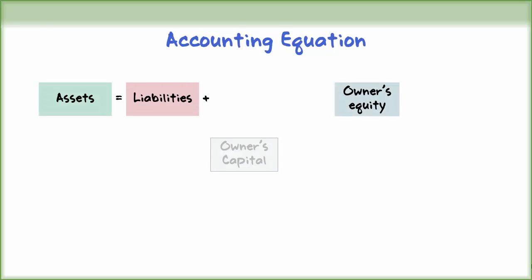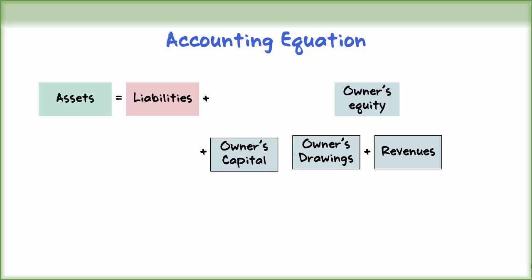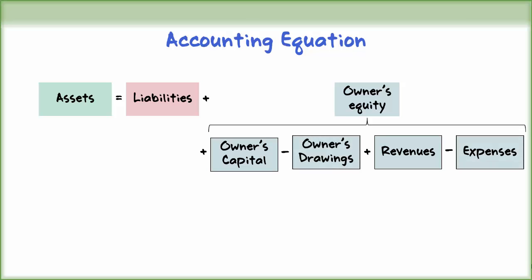In a business, owner's investments and revenues increase owner's equity. Both owner's capital and revenue have a normal credit balance. On the other hand, owner's drawings and expenses decrease owner's equity. Both owner's drawings and expenses have a normal debit balance.